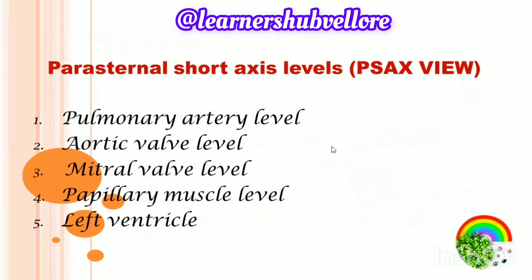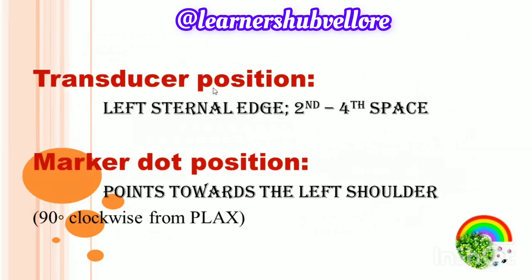Coming to the parasternal short axis levels. There are five: pulmonary artery, aortic valve, mitral valve, papillary muscle, and left ventricle. For all these levels, the transducer position is the left sternal edge at the second to fourth intercostal space. The marker dot points towards the left shoulder — 90 degrees clockwise from the parasternal long axis view. By tilting the transducer on an axis between the left hip and right shoulder, short axis cuts are obtained at different levels from the aorta to the left ventricular apex. This angulation of the transducer from the base to the apex of the heart for short axis views is known as bread loafing.